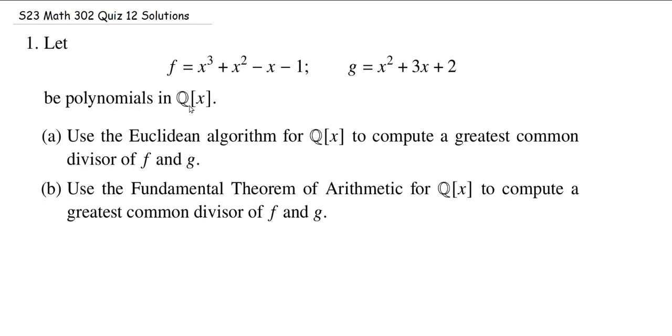Let's try the Euclidean algorithm on this. The Euclidean algorithm means I'm going to use the division algorithm multiple times. I should be able to write f as q times g plus some r, where the degree of r is less than the degree of g, which in this case equals 2. So I'm just going to copy my f: x³ + x² - x - 1 equals q times g, which is x² + 3x + 2, plus some remainder.